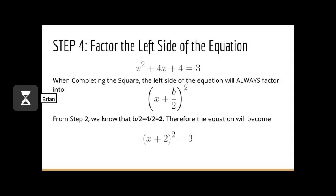Step 4 for completing the square is to factor the left side of the equation. We have x squared plus 4x plus 4 equals 3. When completing the square, the left side will always factor into x plus b over 2, the whole thing squared. To save time, we replace the left side with x plus b over 2 squared. Since b over 2 equals 2, our new equation is x plus 2, the whole thing squared, equals 3.